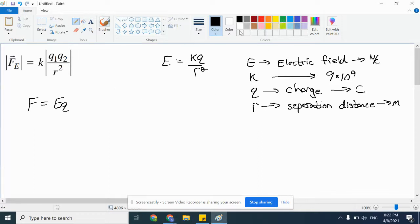What's not on the equation sheet, but the equation you'll be using today, is this one here. E equals KQ over R squared. E is the electric field in newtons per coulomb. K is still 9 times 10 to the 9th. Q is charge, and R is the separation distance.